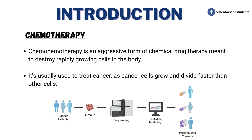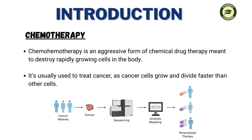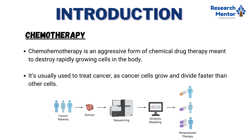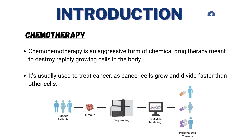Chemotherapy. Chemotherapy is an aggressive form of chemical drug therapy meant to destroy rapidly growing cells in the body. It is usually used to treat cancer, as cancer cells grow and divide faster than other cells. Chemotherapy is often used in combination with other therapies, such as surgery, radiation, or hormone therapy.